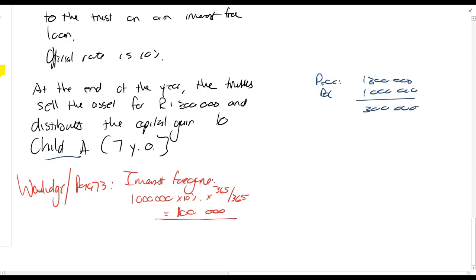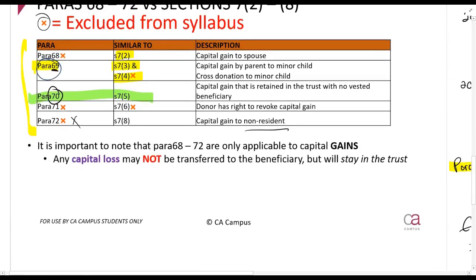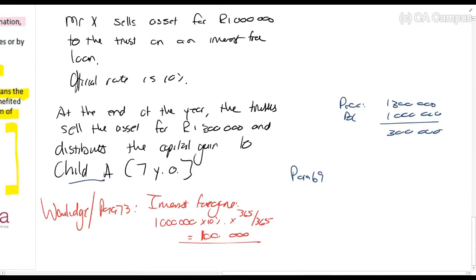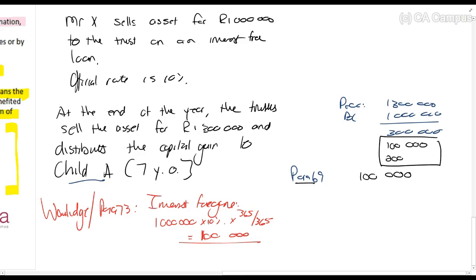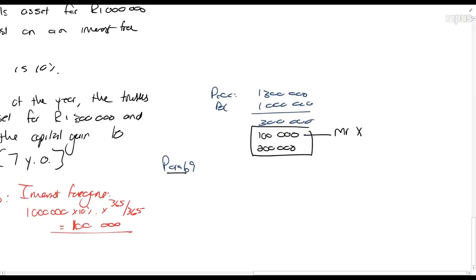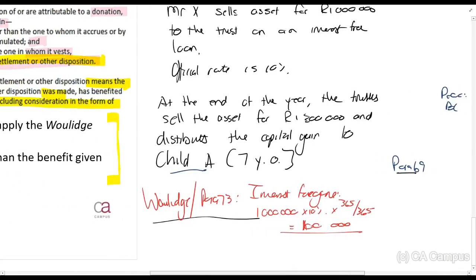Usually, because child A is a minor, in terms of paragraph 69, the child's father Mr. X should be taxed on that R300,000. But the maximum that can be taxed in terms of paragraph 69 — because this is like section 7 — is R100,000. So of that R300,000: R100,000 will be taxed in the hands of Mr. X the parent per paragraph 69, and R200,000 will be taxed in the hands of child A the minor because of the Volach Principle, paragraph 73.